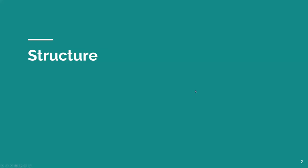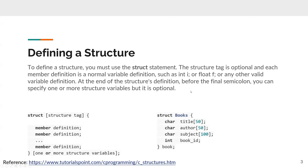The first part is the structure. To define a structure, you must use a structure statement. As shown in the statement on the left, if we want to define a structure in C, we first need to use the keyword called struct. And then the structure tag is optional.